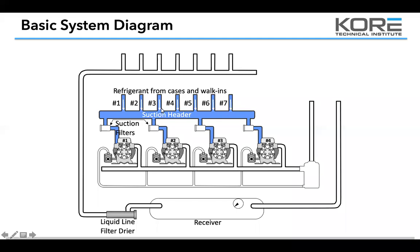On older racks that are grossly oversized, the stage four or larger compressor won't run a lot and it sometimes causes problems. Make sure when you're dealing with rack staging that you're really looking at that strategy. Look at your cycle times — you don't want stage one cycling too fast. Copeland and Bitzer both want to see that compressor cycling between six and eight times per hour, so they want to get some good run time.